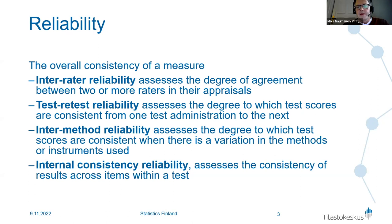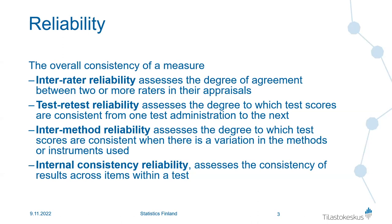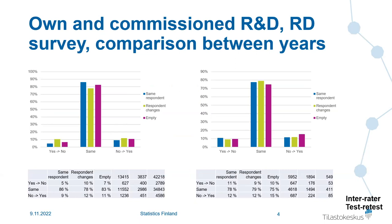Unfortunately, the national R&D survey and the Community Innovation Survey are not administered to the same companies simultaneously, which hinders test-retest and inter-method reliability measurement. Statistics Finland wants to reduce the burden on companies, so there is very little overlap between the two surveys.